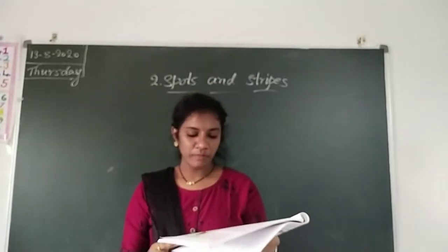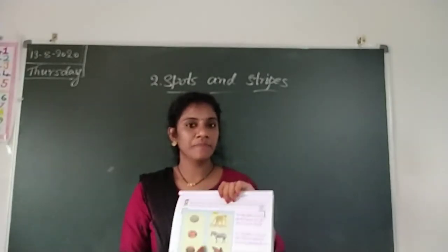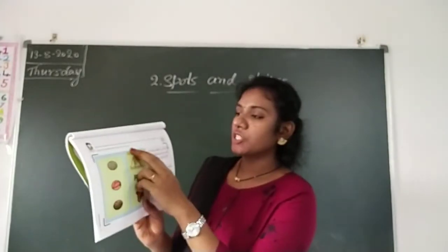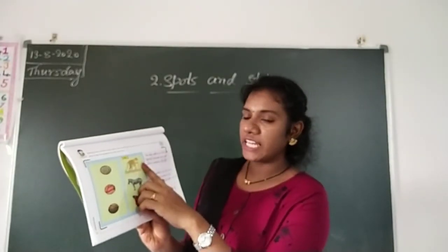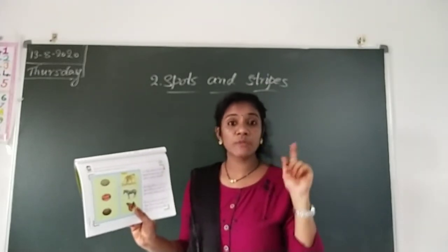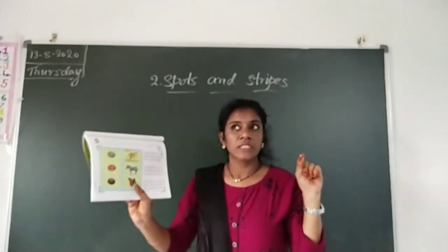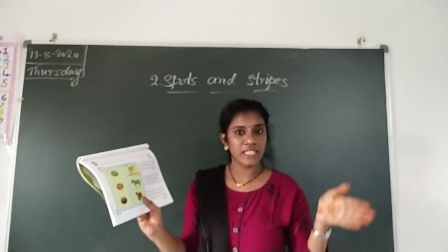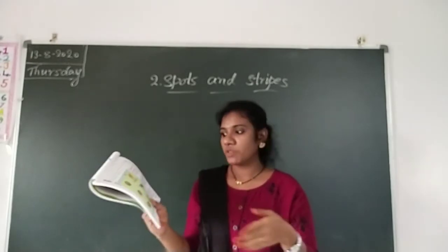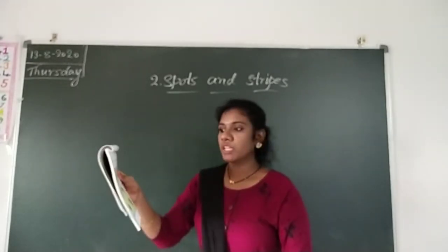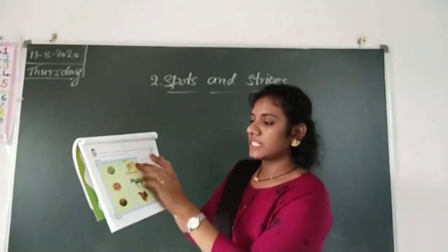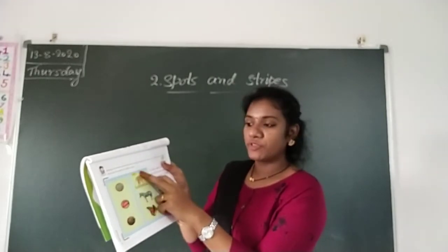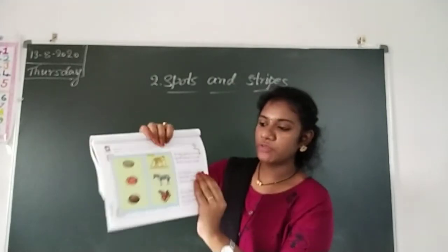See here, children. Open page number 27. Here see activity 2.6. Identify the animals and match each of the given patterns to the correct animals. They already have some patterns — like spots. Spots are observed on the cheetah. And stripes — zebras have stripes. You have to observe that pattern and write how the pattern is useful to them.